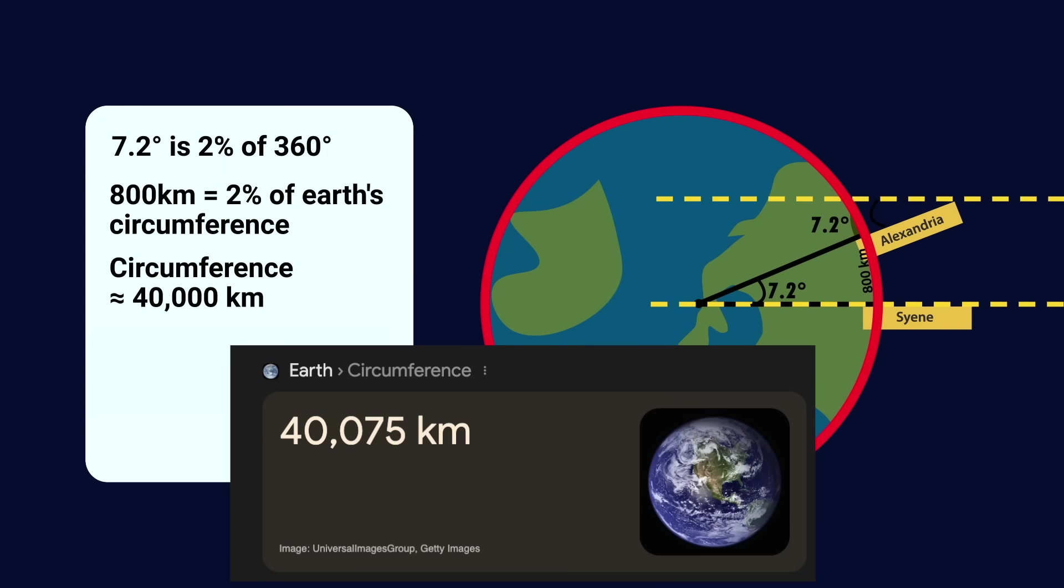And the actual circumference of the Earth is super close to that. His actual measurements gave something closer to 39,000 kilometers, but still, quite impressive.